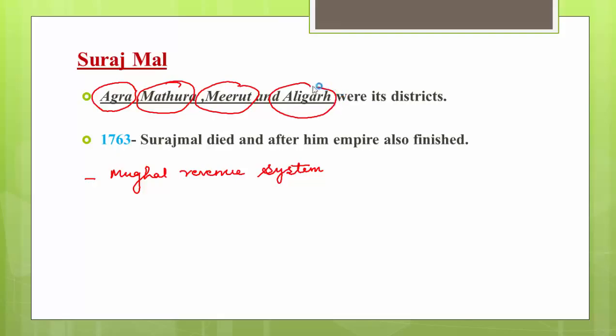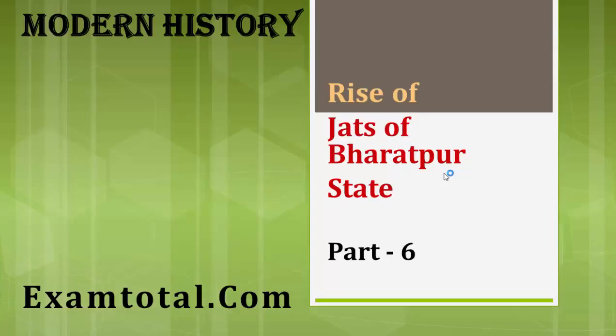Agra, Mathura, Meerut, and Aligarh — all presently in the state of Uttar Pradesh — were in the dominion of Raja Suraj Mal. In 1763, Suraj Mal died, and after him the empire also declined. The Jat kingdom was not able to survive for a very long time and gradually sank into insignificance. The last important leader of the Jat community was Suraj Mal.